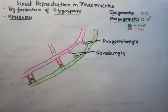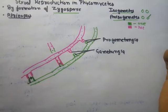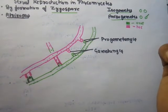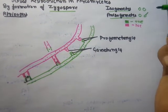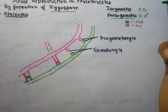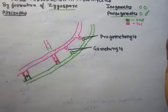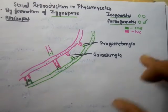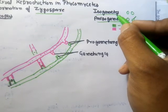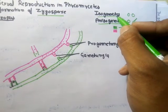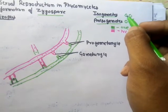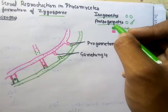In class Phycomycetes, sexual reproduction takes place by zygospores — spores that develop from the zygote. During sexual reproduction, gametes fuse to form a zygote, which then divides to produce zygospores. The gametes that fuse can be of two types: isogametes, which are similar in morphology ('iso' meaning similar), and anisogametes.